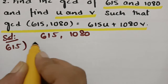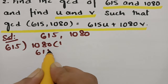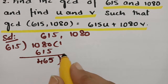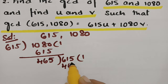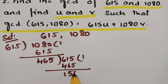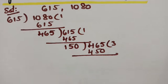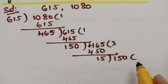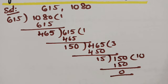I am dividing 615 into 1080. This goes in one time giving 615. Subtracting, we get 465. Bringing 615 down again, it goes in one time giving 465. Subtracting gives 150. Bringing 465 down, it goes in three times: 3 times 150 is 450, and the remainder is 15. Bringing 15 down, 15 times 10 is 150, and finally we get 0.